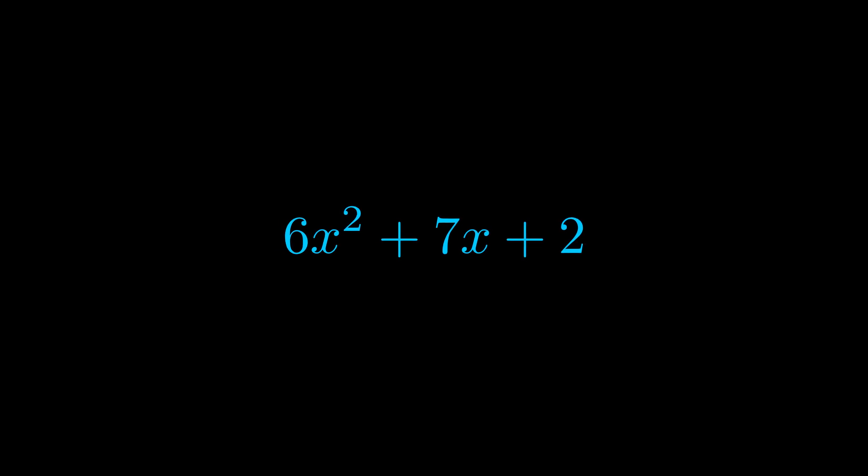Here we can see that our a value is the coefficient on the x squared term and our c value is the constant term. When we multiply these two values we get this value here in magenta.